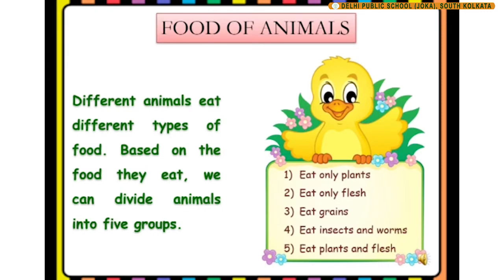Food of animals. Different animals eat different types of food. Based on the food they eat, we can divide animals into five groups.